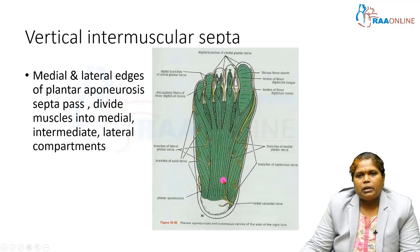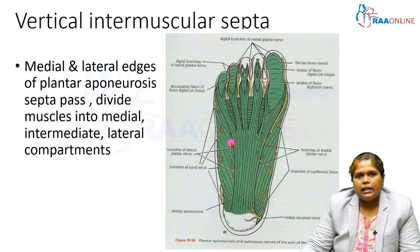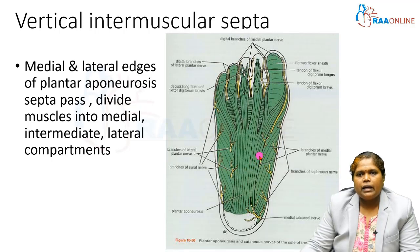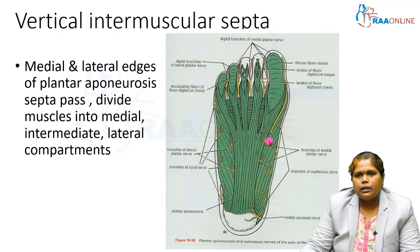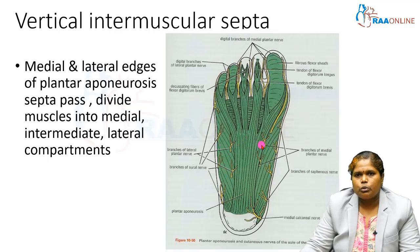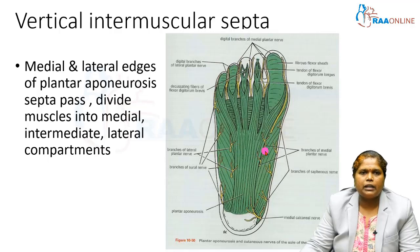From the medial and lateral edges of the plantar aponeurosis, vertical septa extend deeper and divide the sole of the foot into three compartments: the intermediate compartment, the medial compartment, and the lateral compartment.